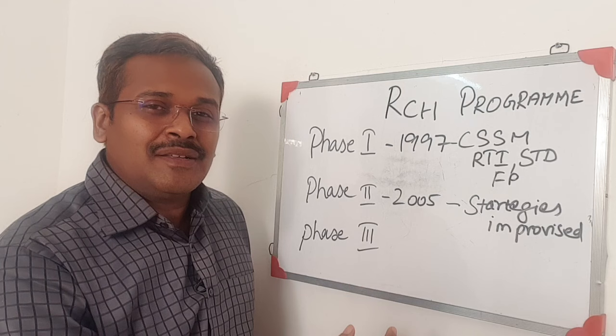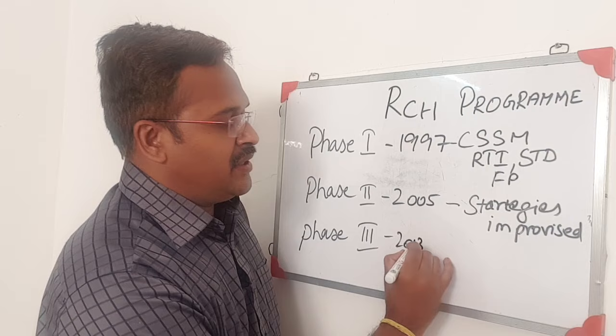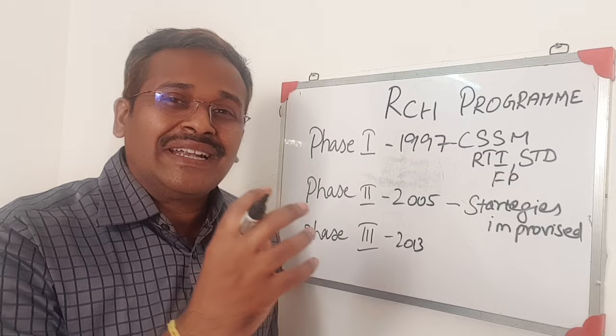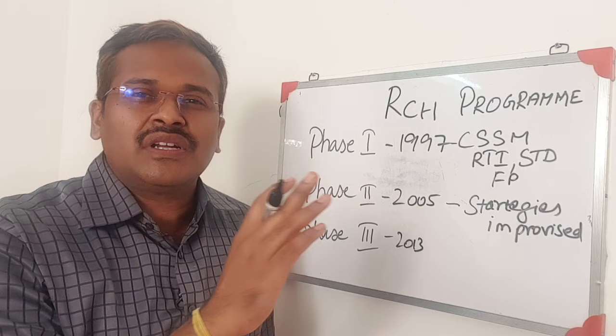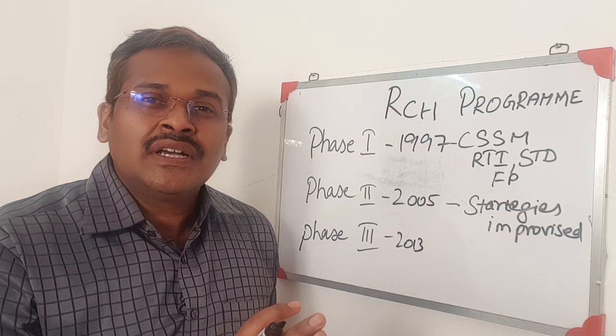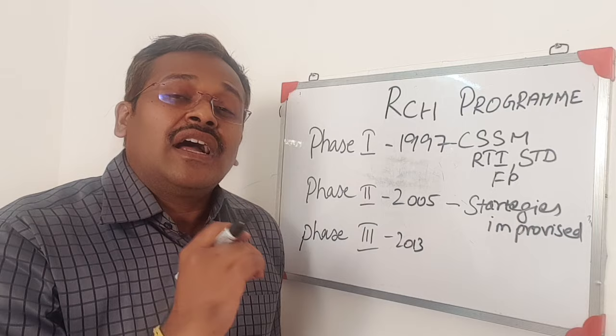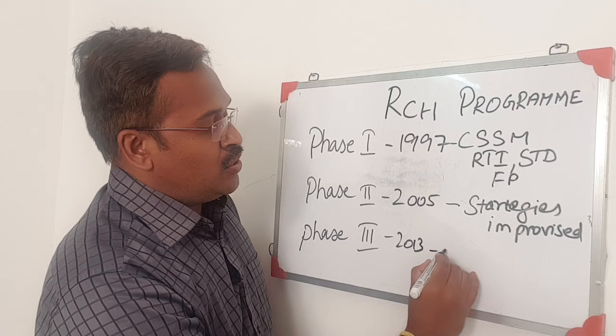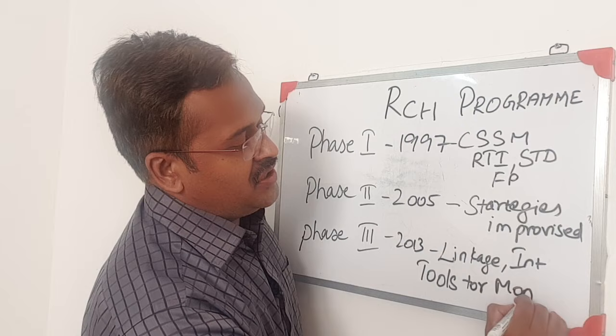Phase 3 is a paradigm shift in the implementation of the program. Phase 3 was implemented in the year 2013. In phase 3, the newborn child was taken as the center, and all the different strategies of RCH phase 1 and phase 2 are integrated and linked. Various indicators were devised to monitor the strategies, and more technology and tools were used in phase 3.